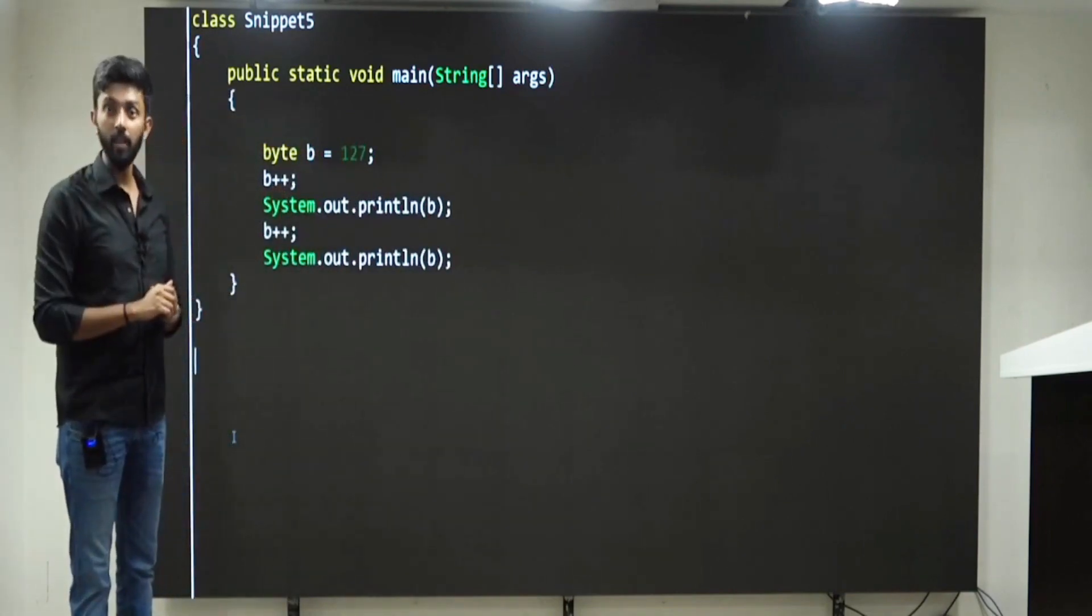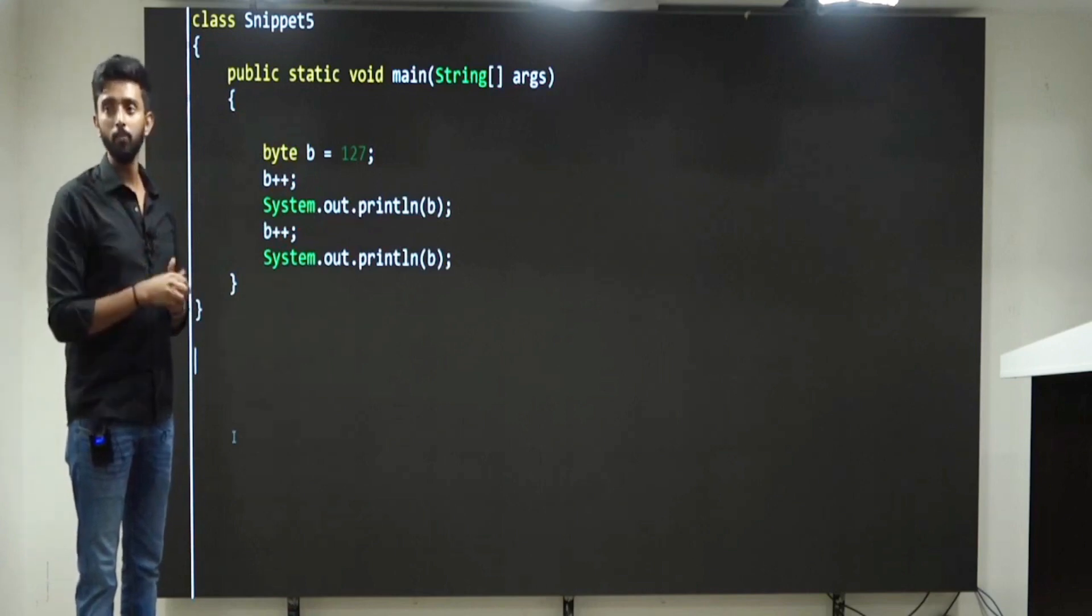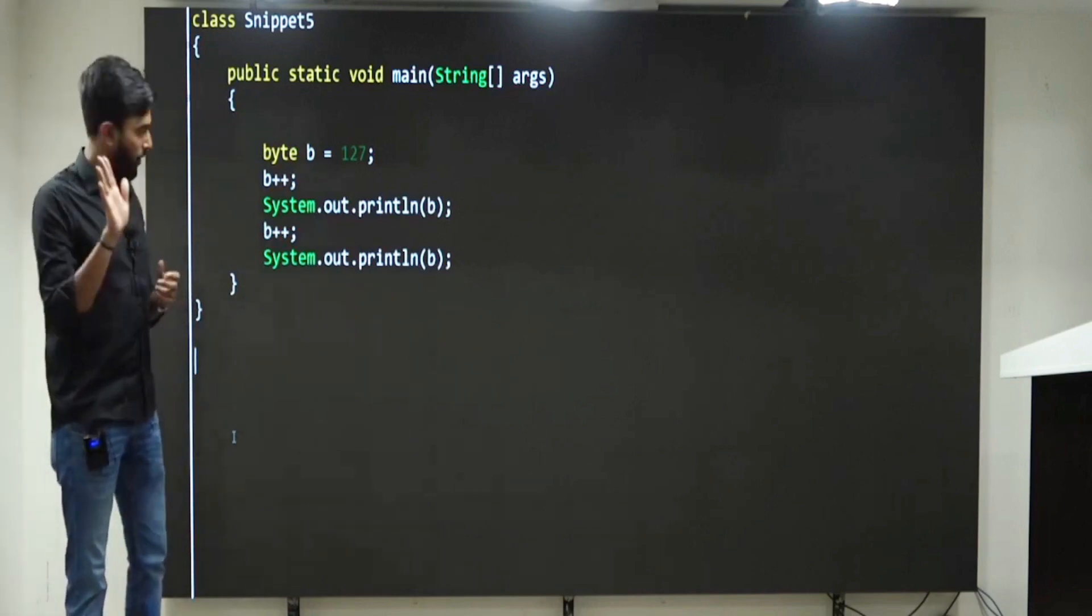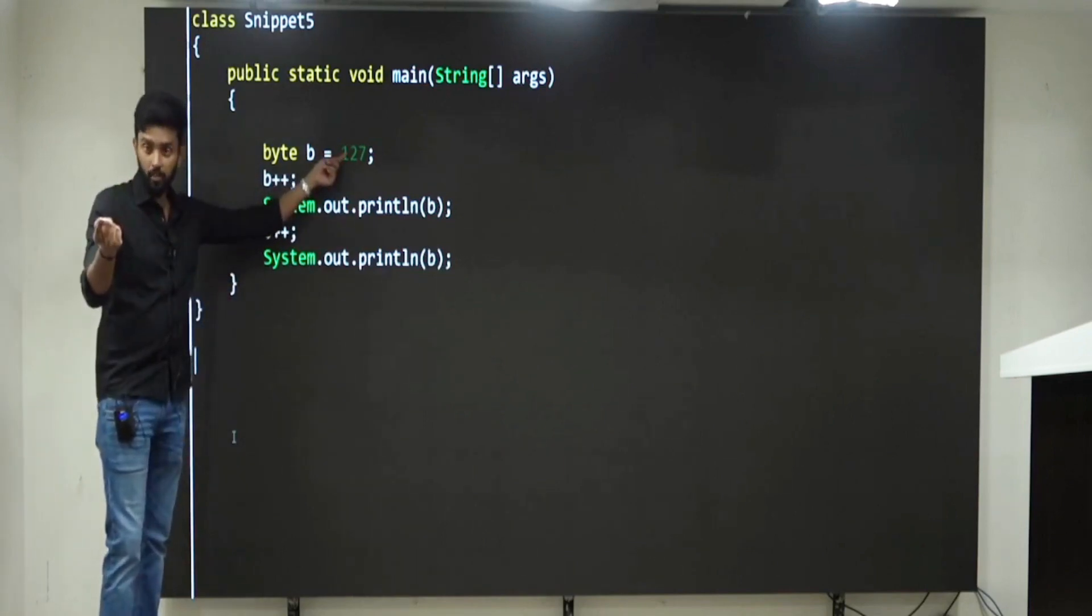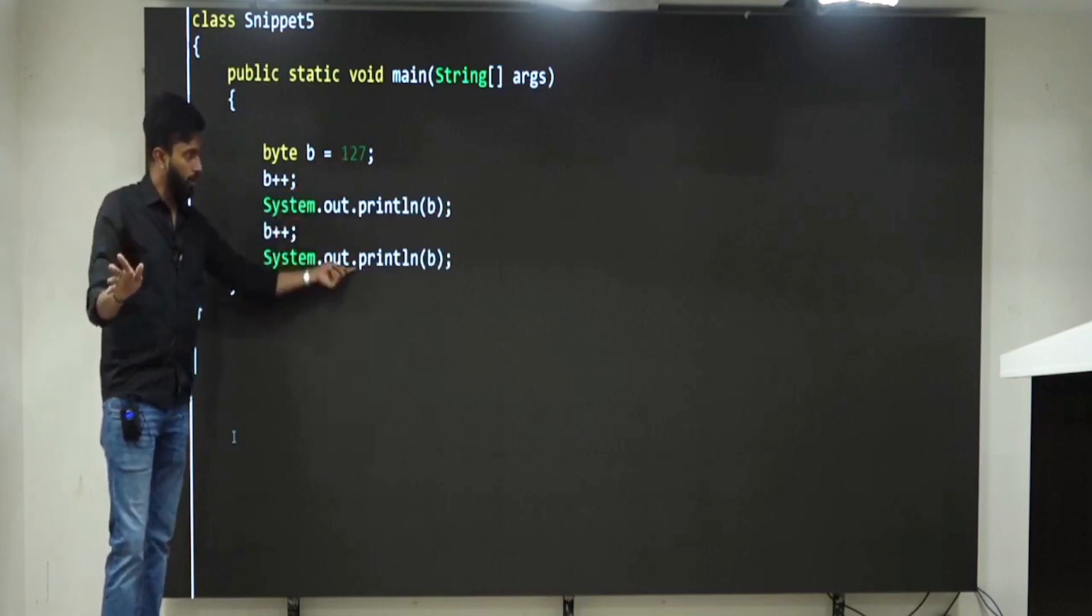So what should happen? Error? No? Minus? Okay. Again, b plus plus, which means 129. Can it store? No. Okay, let's see.